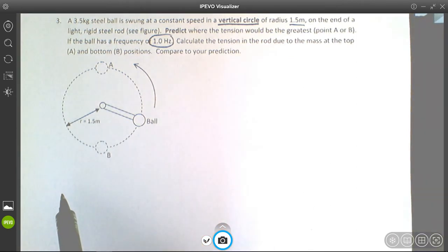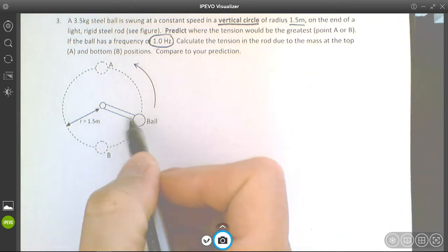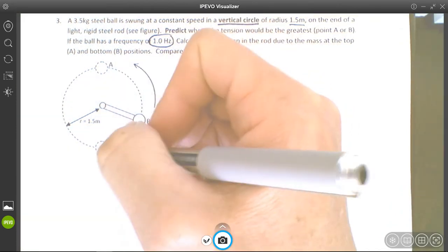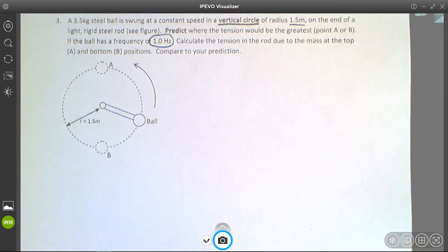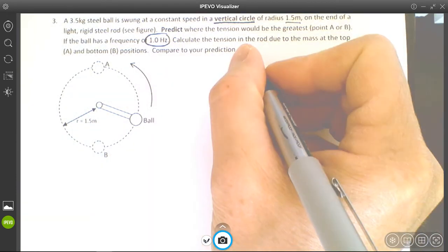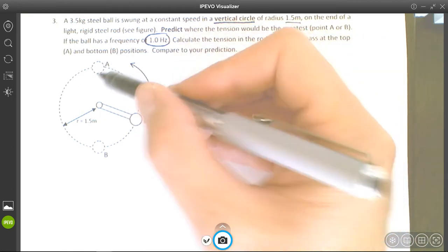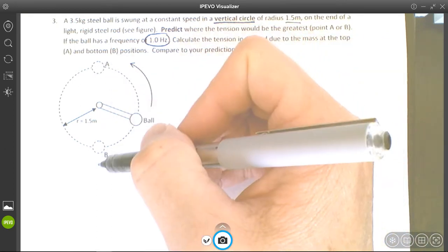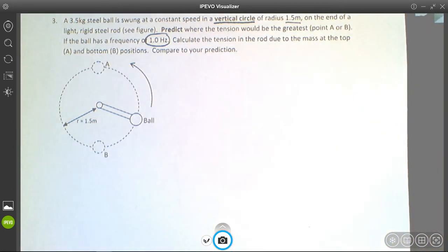Another way of thinking about that is: what is the tension in the rod going to be when it's at the top versus at the bottom? Is it going to be higher or lower at one of those positions? So what I'd like you to do is predict where the tension in the rod will be highest - at point A or at point B.